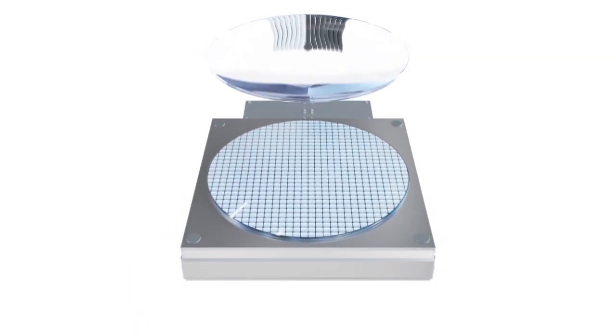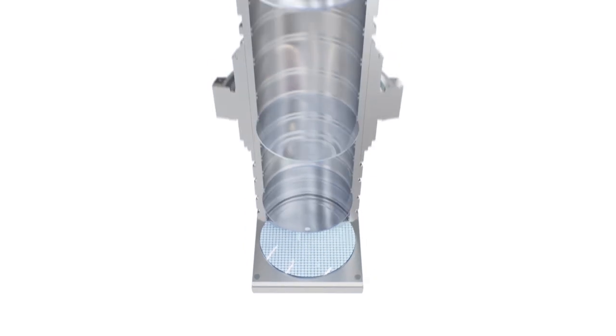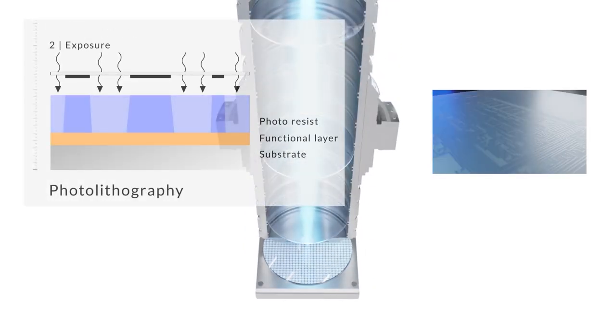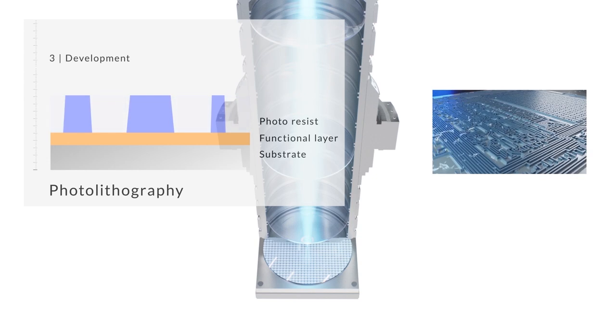Ein Schlüssel zur Miniaturisierung der Chipstrukturen ist die Fotolithografie. Dabei werden die Chipstrukturen von einer Fotomaske durch eine optische Abbildung auf einen Wafer übertragen.